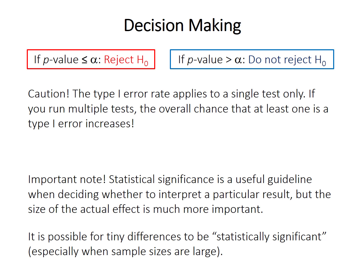Statistical significance is a function both of the size of the effect, but also the sample size that you're working with. So tiny differences between groups can end up being statistically significant if you have a large sample size, even though they might not be meaningful in a real world sense.